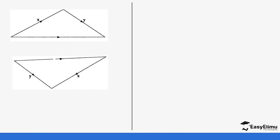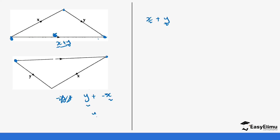Now we have been given two vectors, X and Y, and we want to get a specific vector from one point to another. It's going to be X plus Y, because to move from this point to this point, we move in direction X first and then plus Y. Similarly, if you want to move from this point to this point in the other direction, it is Y plus minus X, which gives us Y minus X.